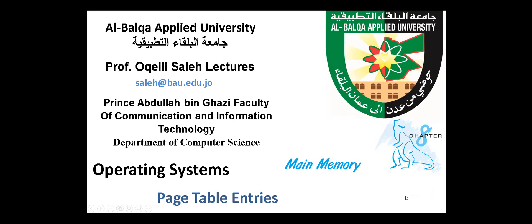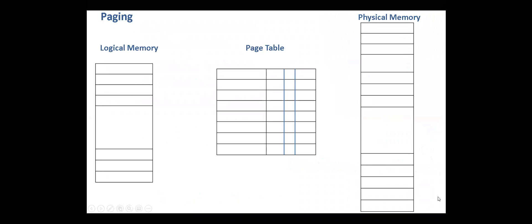Hello everyone. Today our topic is page table entries. In the previous videos we discussed paging and the methods used to implement page tables. The main function of the page table is to store where each logical page is stored in physical memory, and in each memory reference we have to access the page table to find out where the logical page is stored.